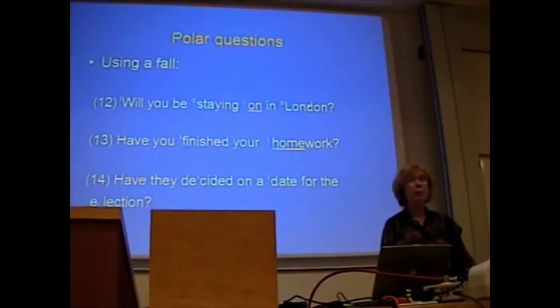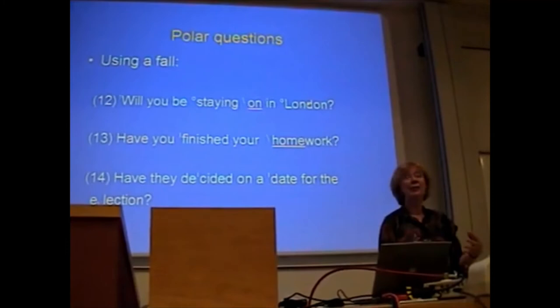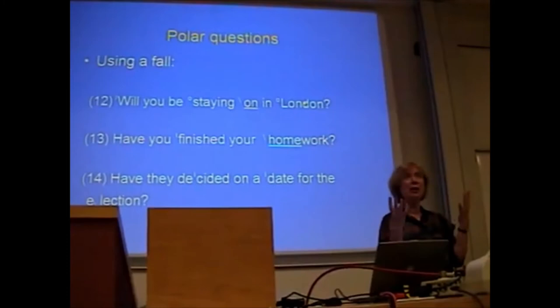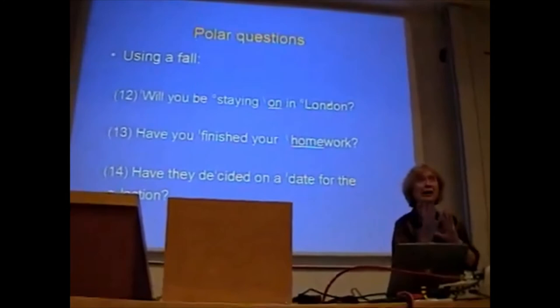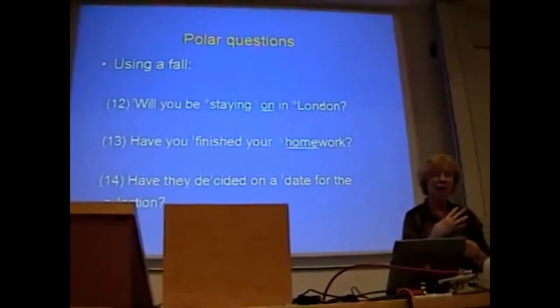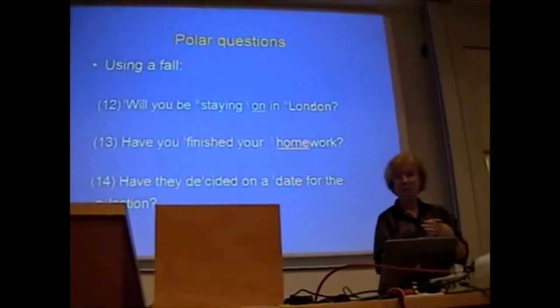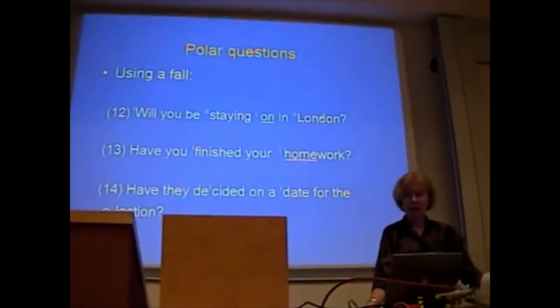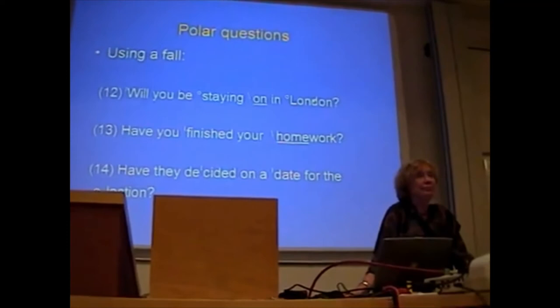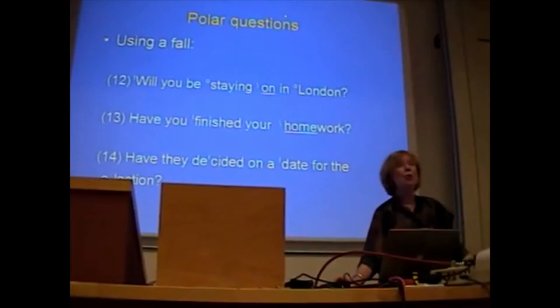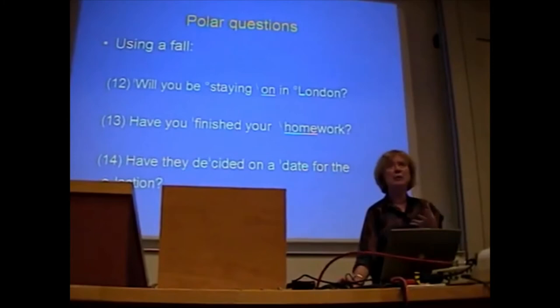'Will you be staying on in London?' [with fall] — that's a very impersonal but perfectly polite way of asking that. A rather more concerned and personal way would be 'Will you be staying on in London?' using the rise. Rise has somehow more personal involvement; the fall is more uninvolved but perfectly friendly. 'Have you finished your homework?' 'Have they decided on a date for the election?' — all of those are perfectly normal with a falling tone.